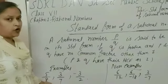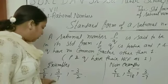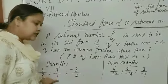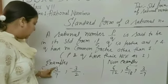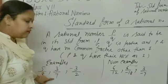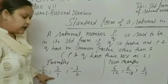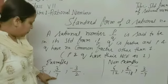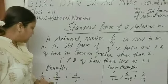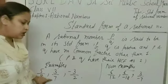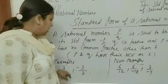Next is 3 upon 7. The denominator 7 is positive, and also 3 and 7 have no common factor other than 1. Therefore, 3 upon 7 is also a Rational Number which is in Standard Form.